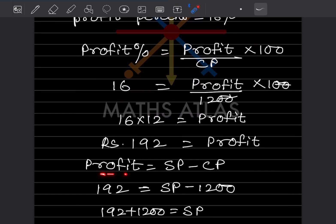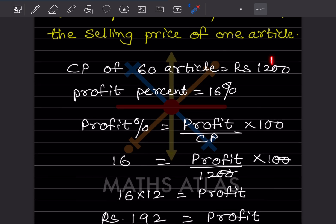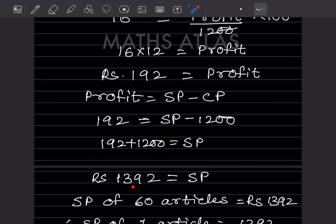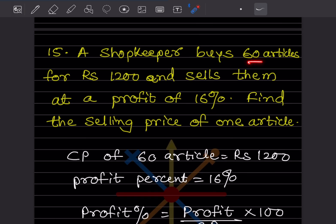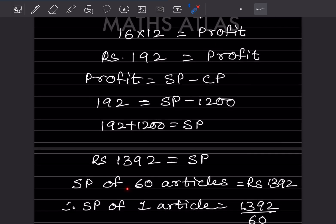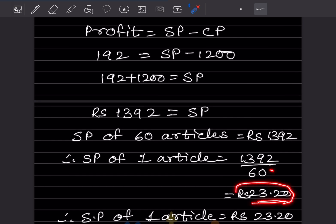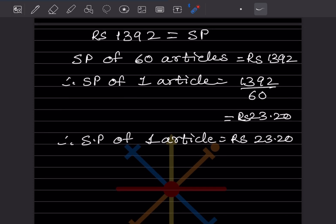Profit equals selling price minus cost price. Profit is 192, cost price is 1200. So 192 equals SP minus 1200, which gives SP equals 192 plus 1200 equals rupees 1392. But this is for 60 articles. To find the selling price of one article: 1392 divided by 60 equals rupees 23.20. So the selling price of one article is rupees 23.20.